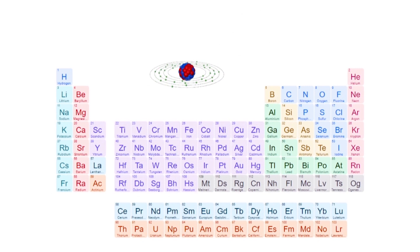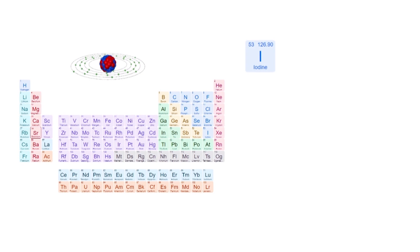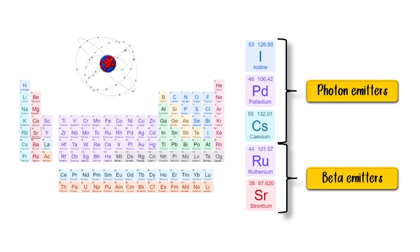The radionuclides used for brachytherapy for ocular tumors are iodine, palladium, cesium, ruthenium, and strontium. The low photon energy seeds—iodine, palladium, and cesium—are photon emitters, while ruthenium and strontium are solid beta emitters.